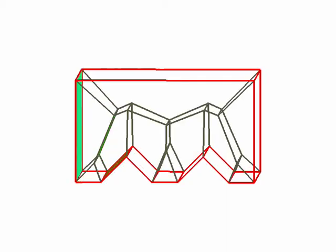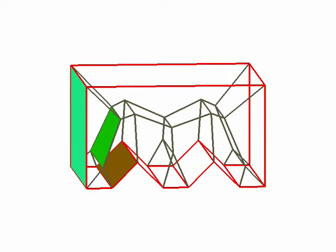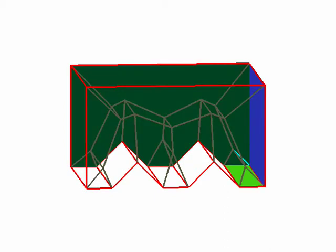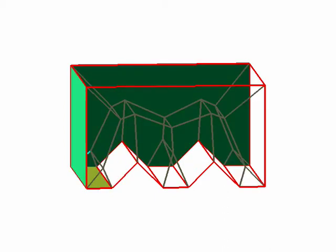Every skeletal edge is the trace sector of three polyhedral faces. Note that the straight skeleton of a convex polyhedron is identical to its medial surface.